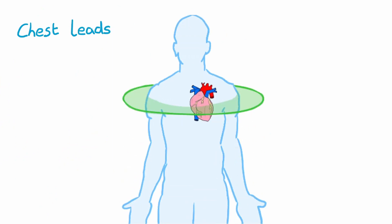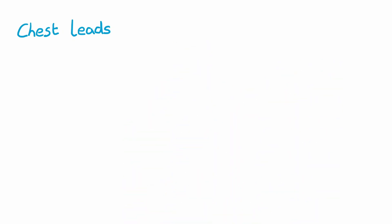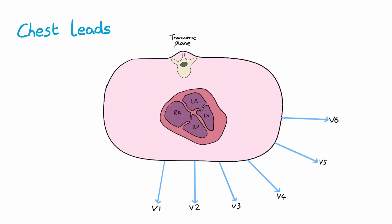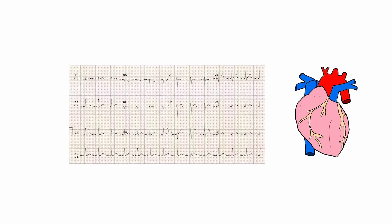Chest leads are measuring electrical activity in the transverse plane. This gives us leads V1 to V6. We can also differentiate between leads based on the area of the heart that it can pick up abnormalities for. This is particularly useful when trying to determine which area of myocardium and therefore which coronary artery is diseased in a heart attack or myocardial infarction.